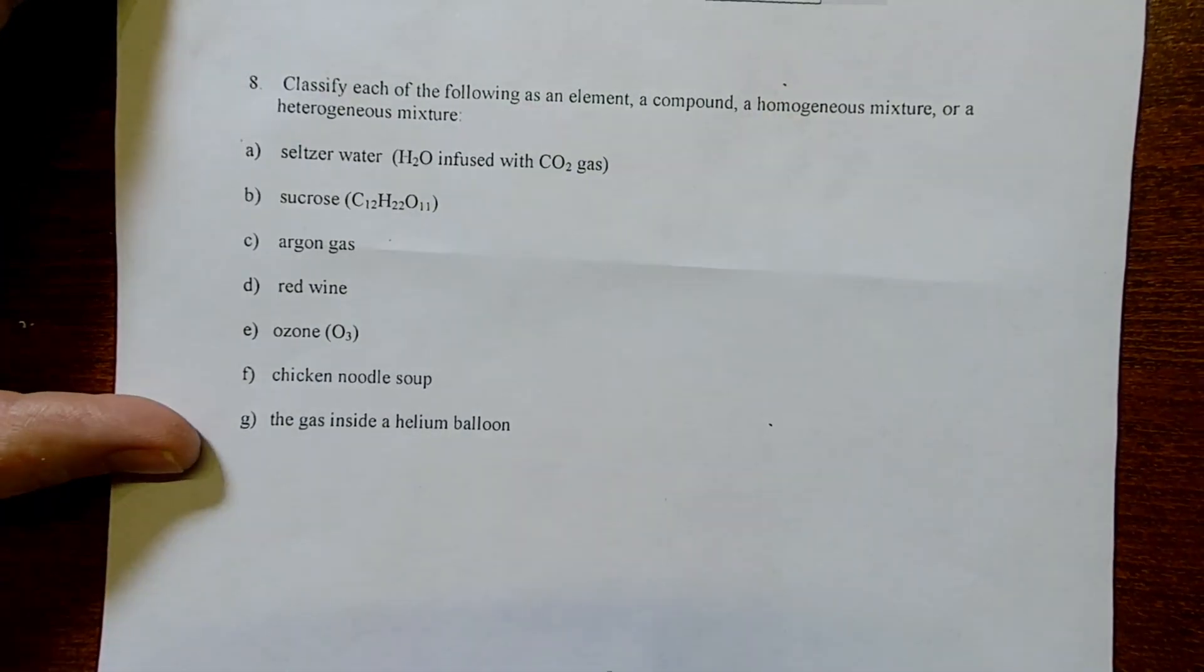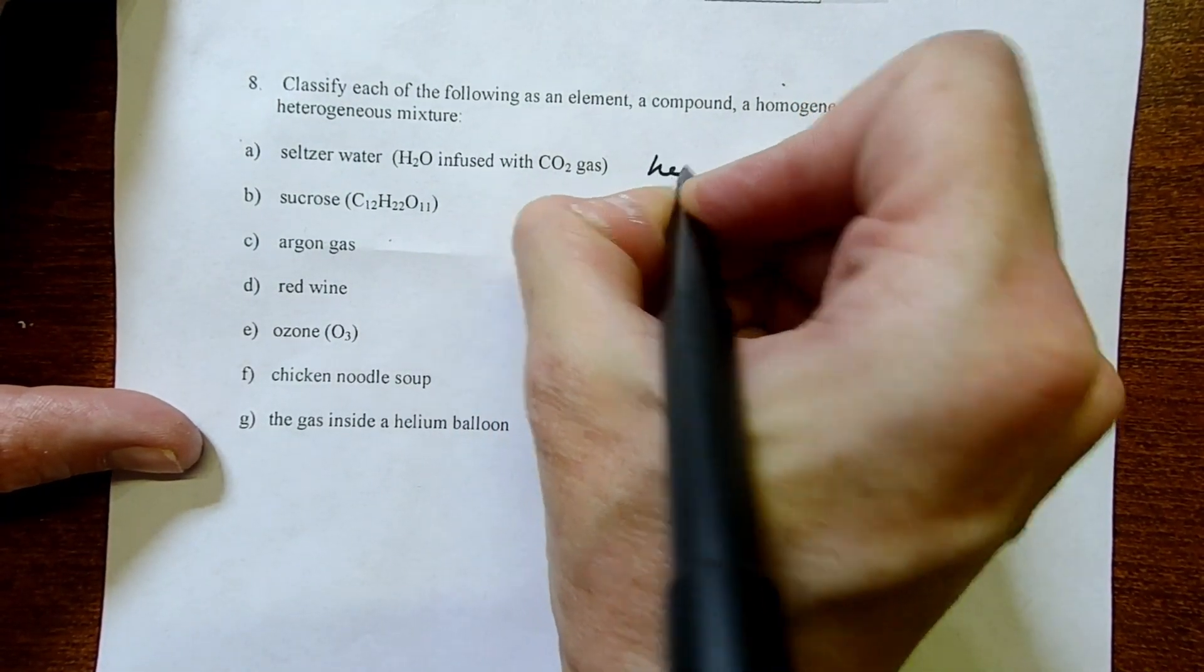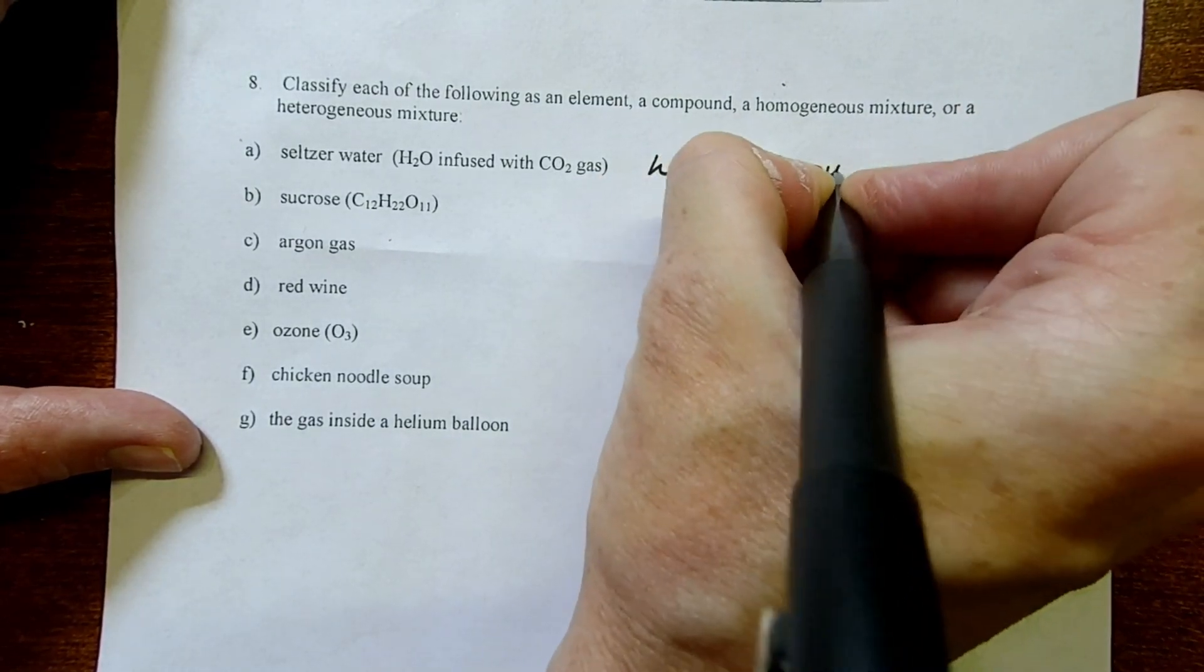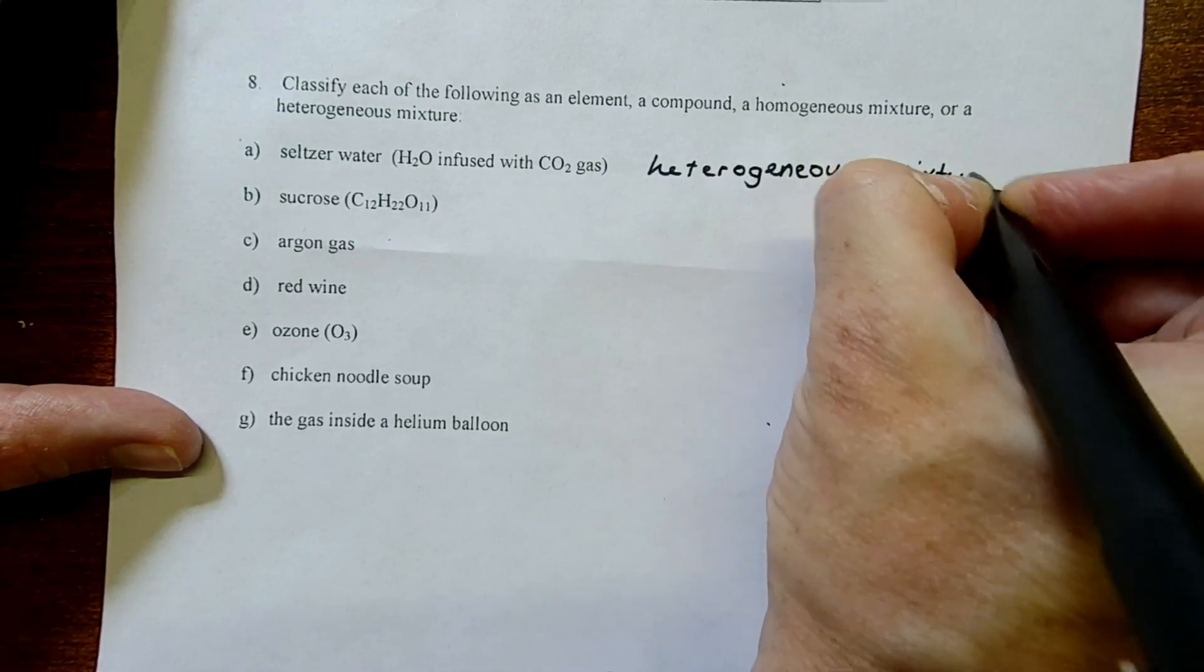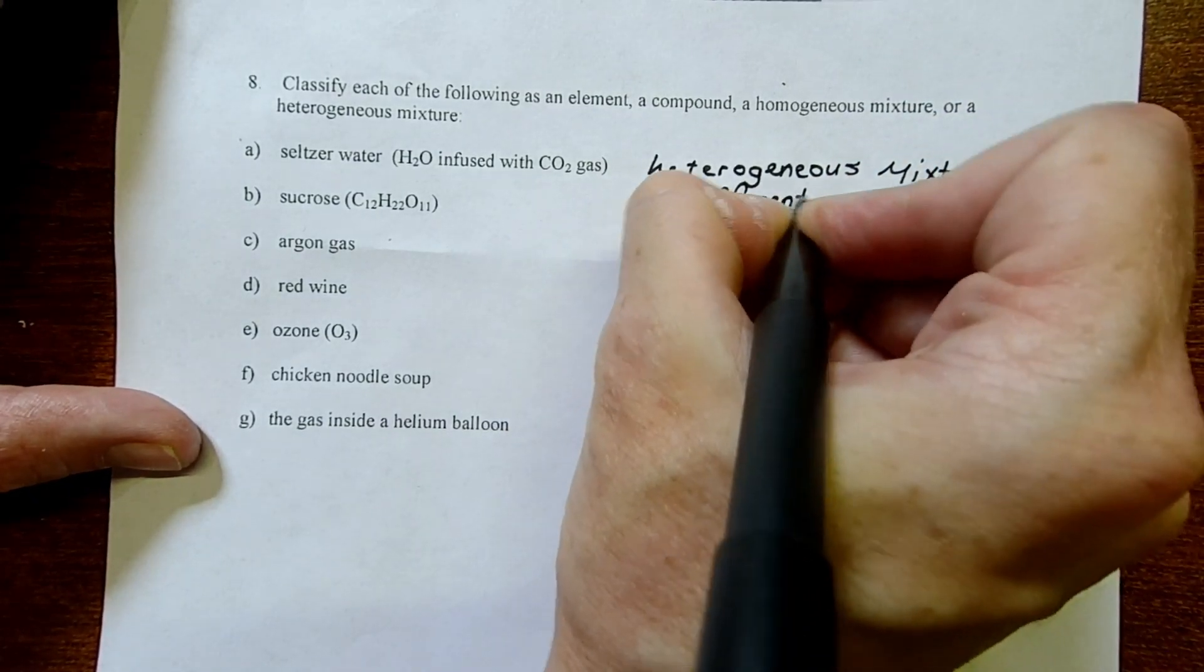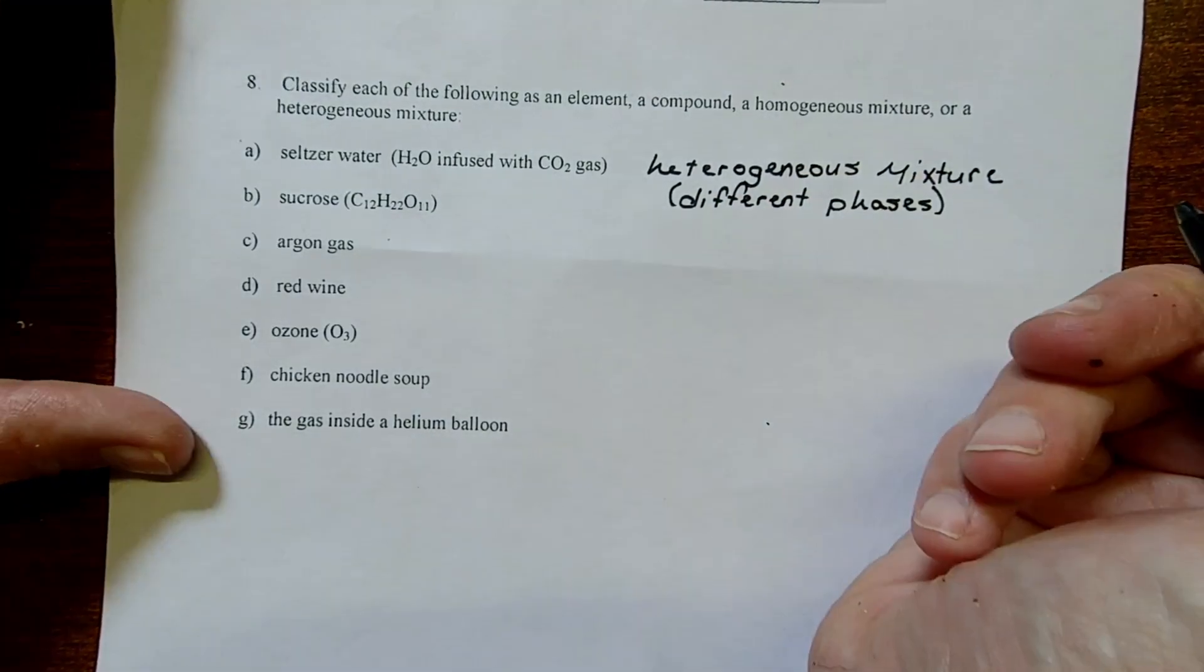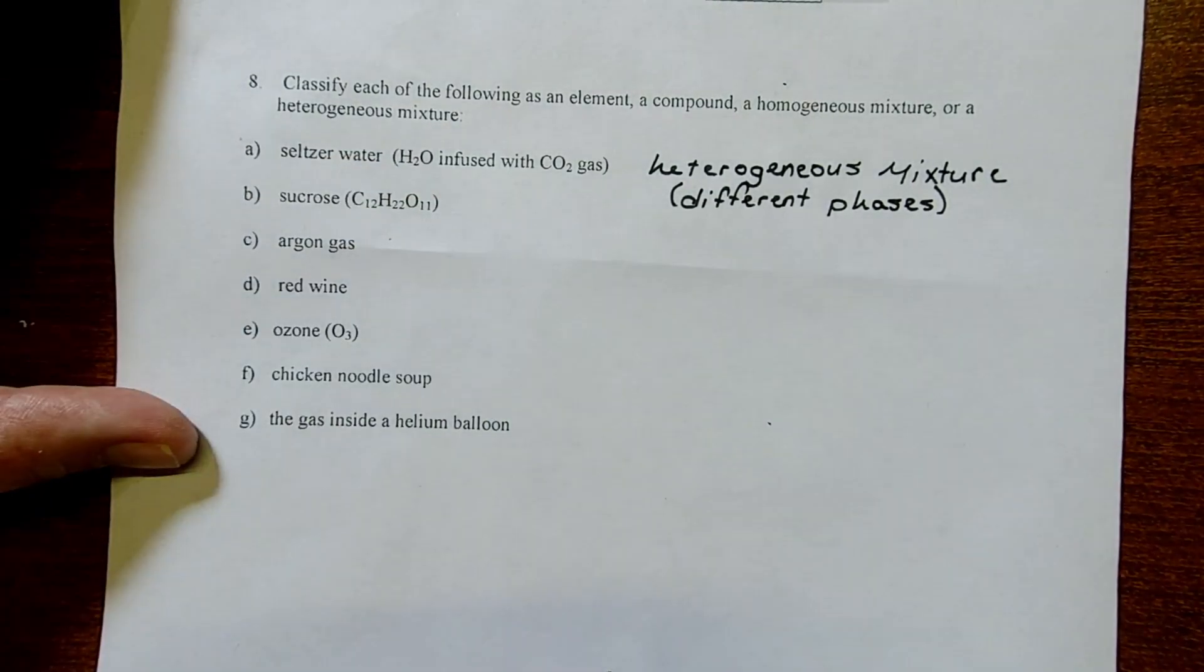To go over your answers for number eight, seltzer water is a heterogeneous mixture. Whenever you have different phases, even if it's the same thing, like ice water, it's going to be heterogeneous. The different phases have different densities, and they're not going to distribute themselves uniformly. There's going to be some stuff floating on top. For instance, with the seltzer water, it's like soda or beer. All the gas collects on top.